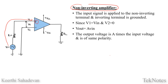For the Non-Inverting Amplifier, V2 is equal to 0 and V1 is equal to Vin. Vout is equal to A times V, with a positive sign, because the input is applied to the non-inverting terminal. This gives the same polarity output. This completes the open loop configurations.